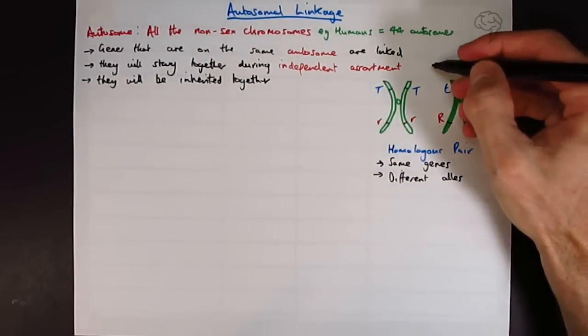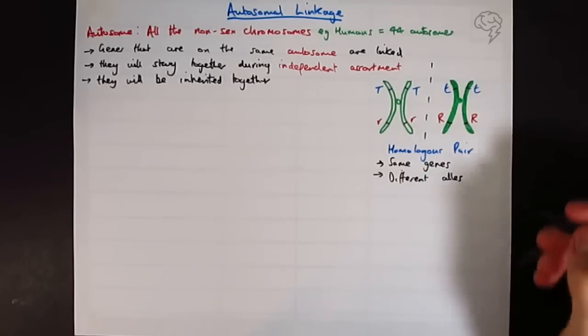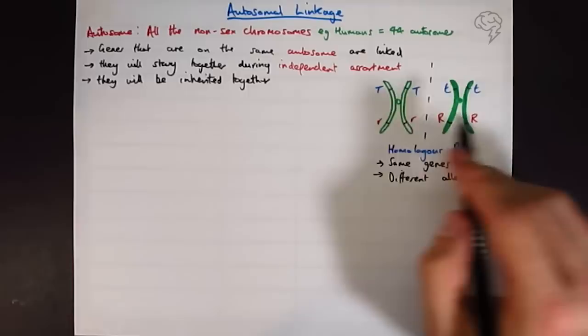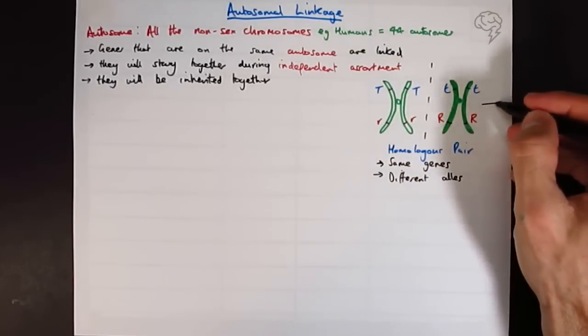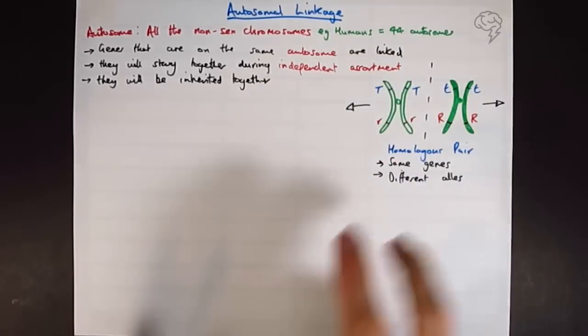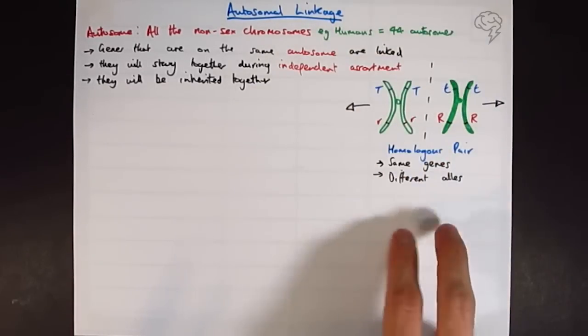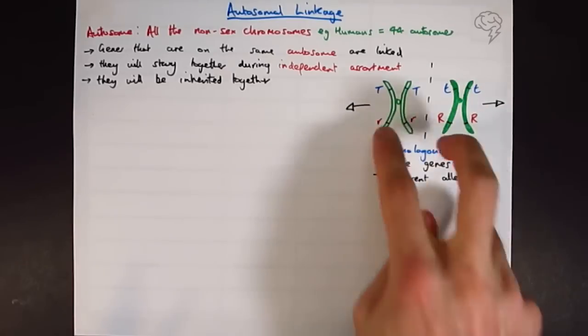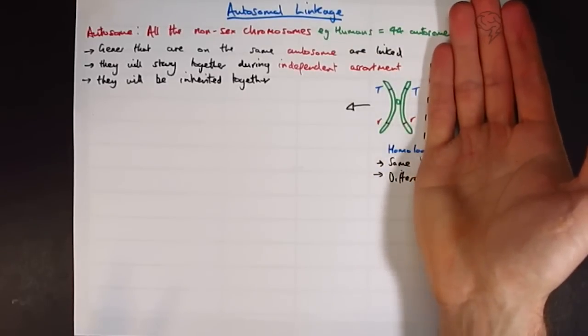So during independent segregation or independent assortment, during metaphase one of meiosis, the homologous pair is going to line up next to each other. It's random, which one goes to on which side. And these are going to separate. So if they're on separate chromosomes, all the chromosomes are going to be in a line down here. If they're on separate chromosomes, then they're not related to each other. But we say that genes that are on the same autosome or same chromosome are linked.